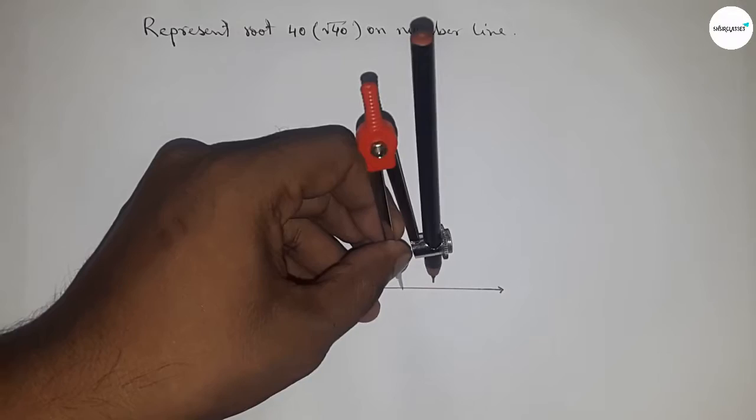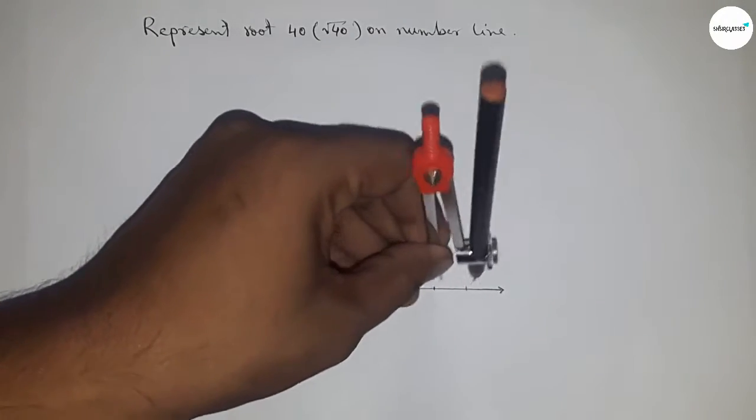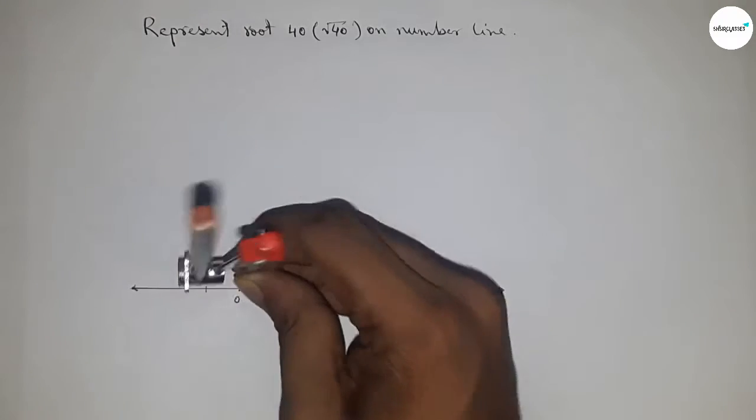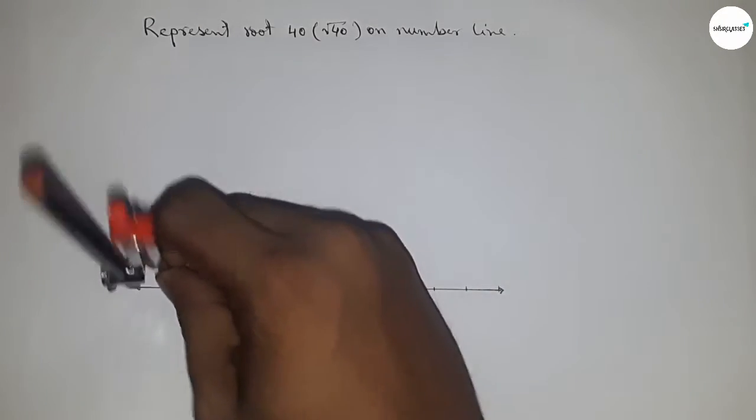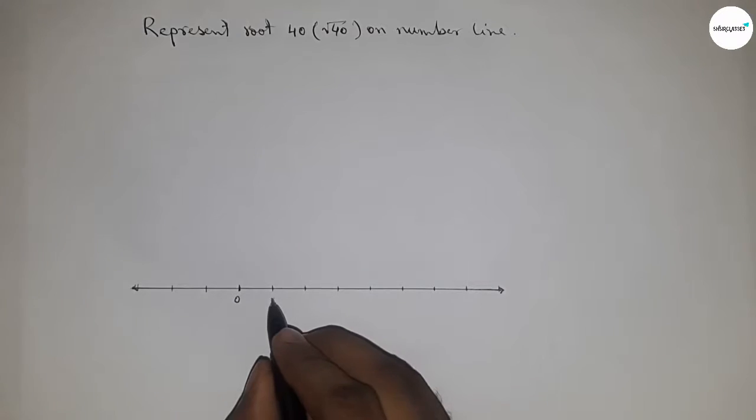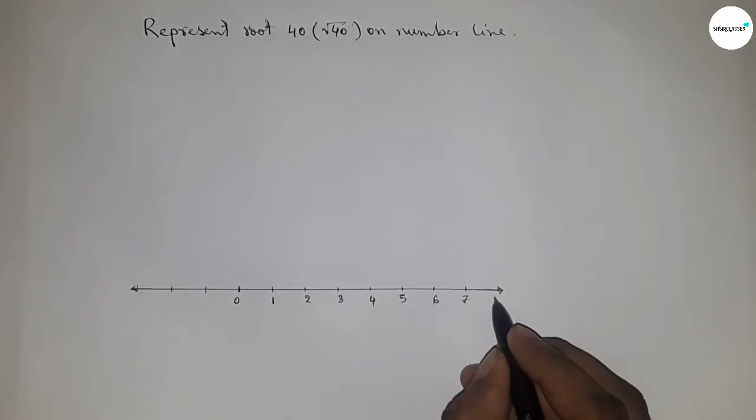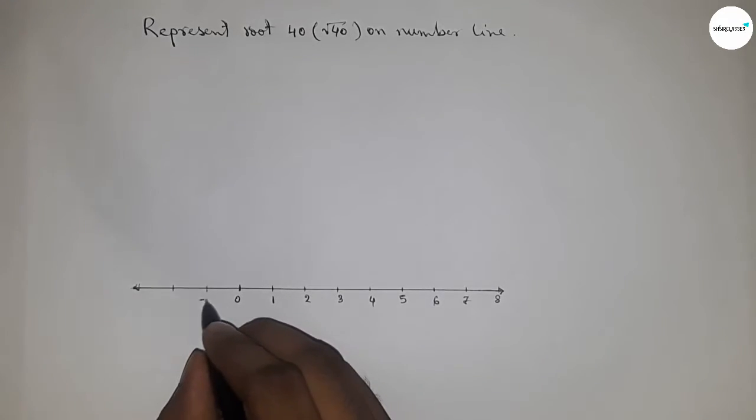Or one unit length, so all lengths are unit length. You can take any length to mark the numbers on the line. So this is 1, 2, 3, 4, 5, 6, 7, 8 and so on. And this side minus 1, minus 2, and minus 3.